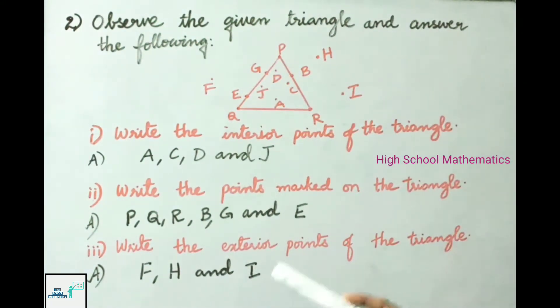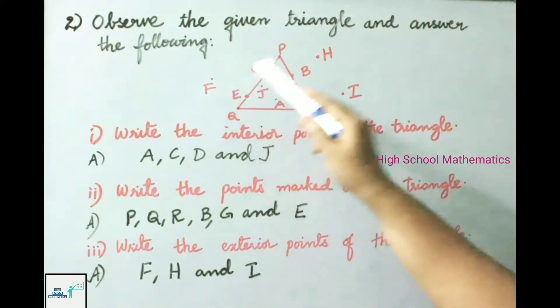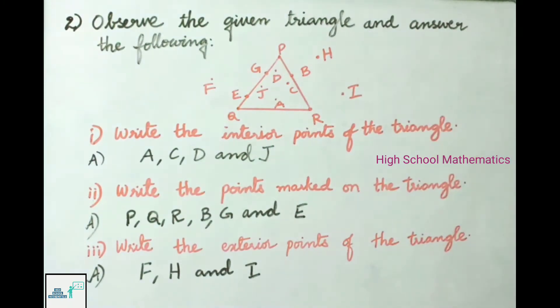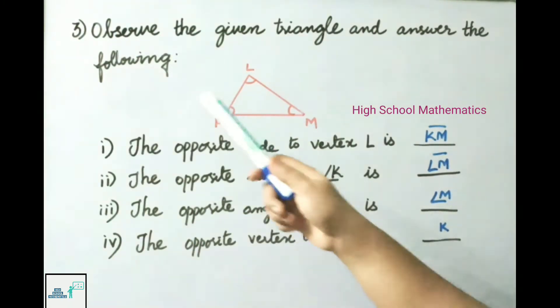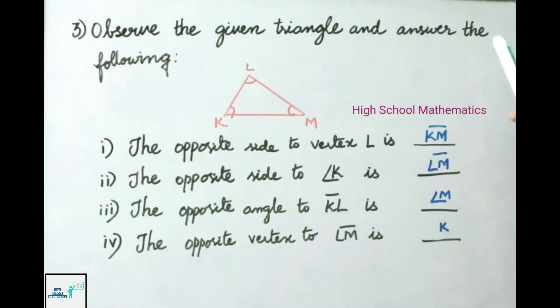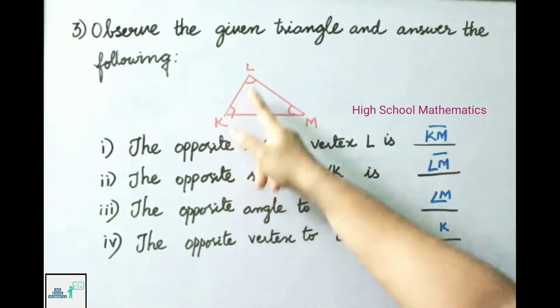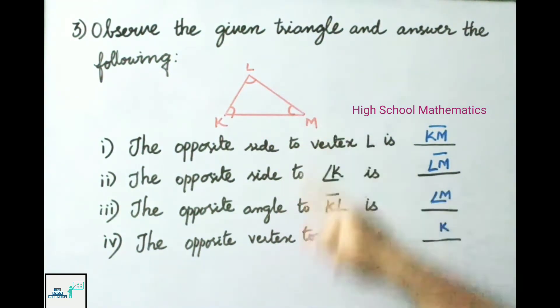See now question number 3. Observe the given triangle and answer the following. See now first one: The opposite side to vertex L is KM. Next, the opposite side to angle K is LM. Next, opposite angle to KL is angle M.